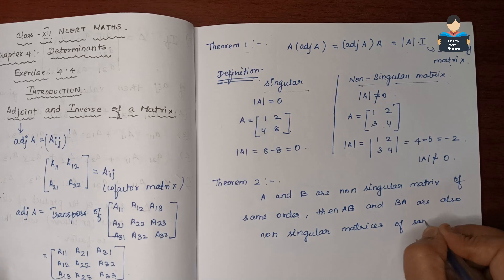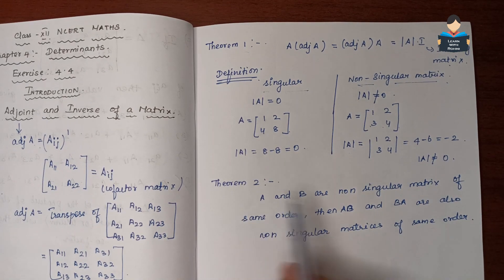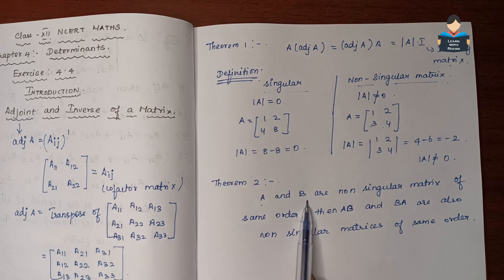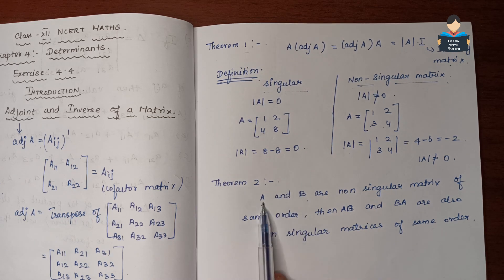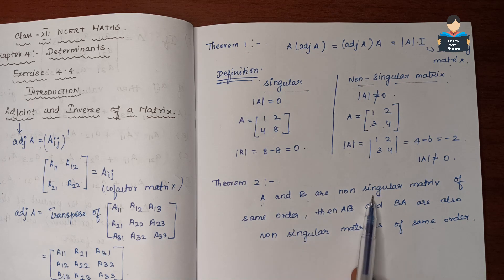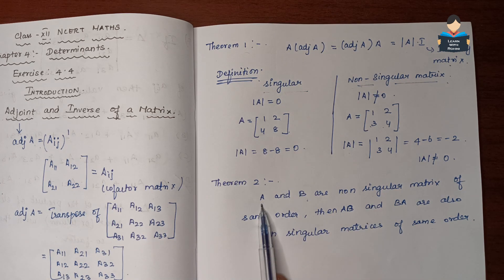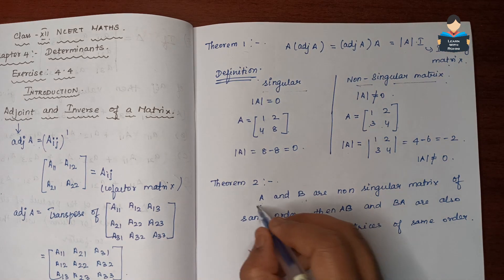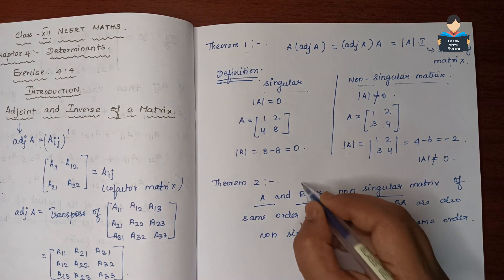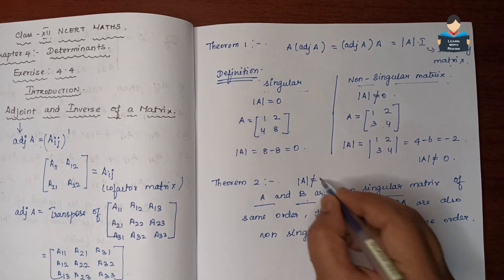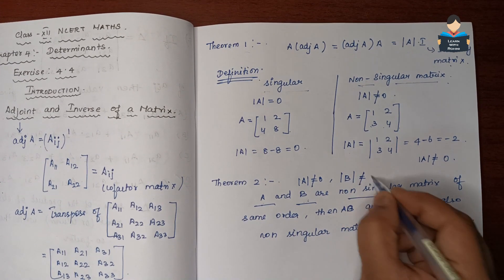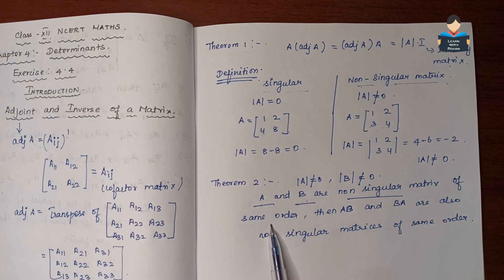Theorem 2: If A and B are non-singular matrices of the same order — meaning determinant of A is not equal to 0 and determinant of B is not equal to 0 — then AB and BA are also non-singular matrices.